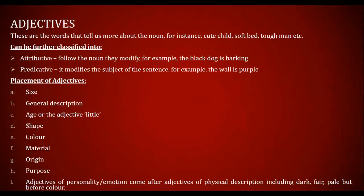Adjectives are words that tell us more about the noun — for instance, 'a cute child,' 'a soft bed,' 'a tough man,' 'an intelligent girl.' They describe the noun, tell us its quality. Adjectives can be further classified into attributive and predicative adjectives. Attributive adjectives come before the noun they modify — for example, 'the black dog is barking.' Here 'black' describes 'dog' and comes before it, so it is an attributive adjective.